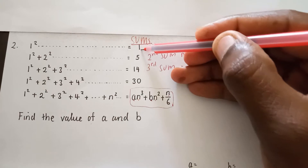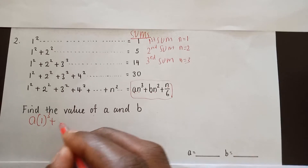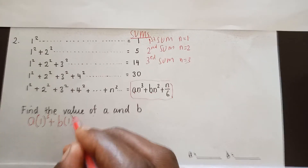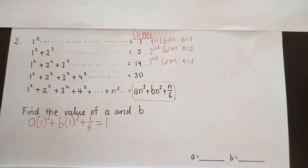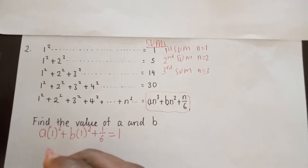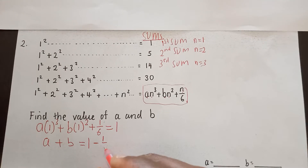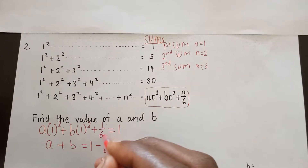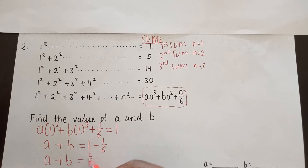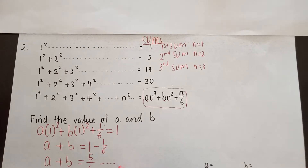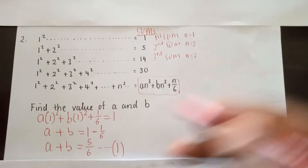Now, how shall we get the simultaneous equations? We shall substitute n with one to get the first sum: a times one cubed plus b times one squared plus one over six should give me one, because the first sum is one. So a plus b equals one minus one over six, which gives us a plus b equals five over six. This becomes our first equation.